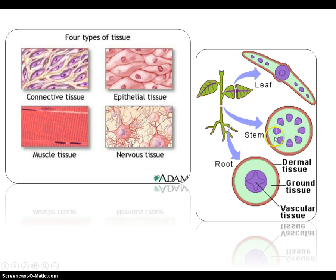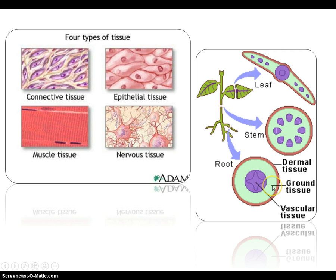In a plant, they have leaf tissue. This is a leaf, this is a stem, and this is a root. There's dermal tissue, which is stuff on the outside mainly for protection. We have ground tissue, which in plants is mostly for photosynthesis and all the functions of the plant. And then we have vascular tissue, which is purple on these diagrams, and it's usually for transport.